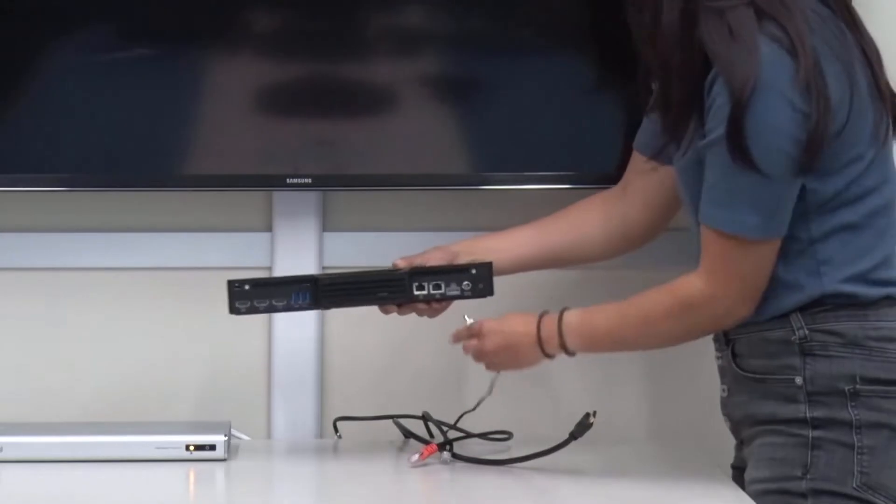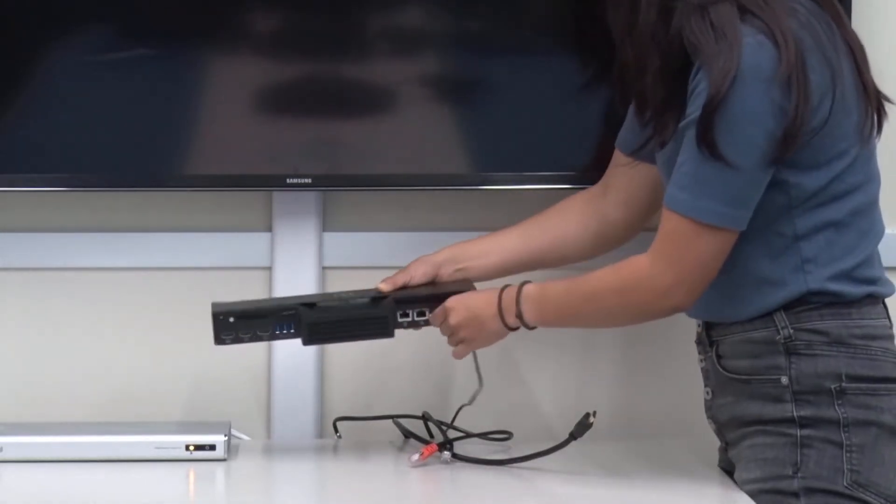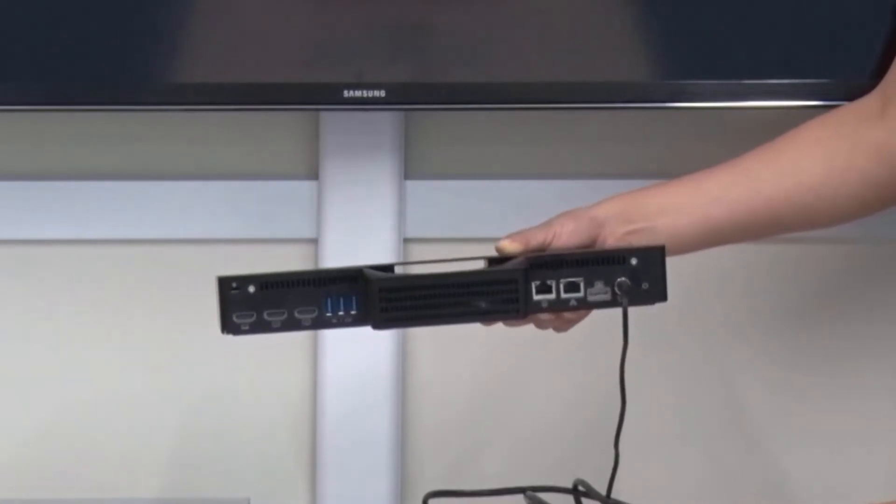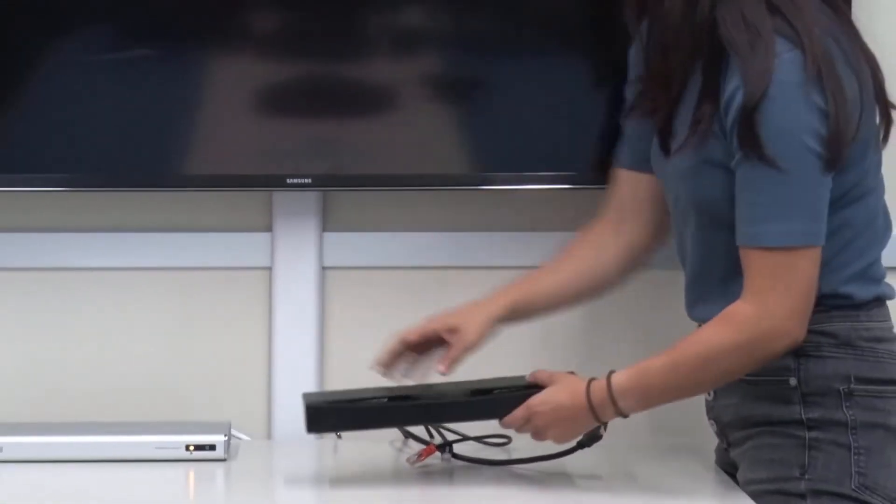Connect the power cable into the back of the hub. As a final step we'll plug the other end into the wall, but we're going to save that for last as that actually powers the whole unit on.